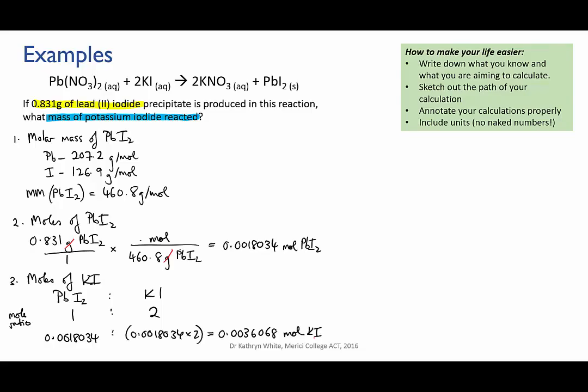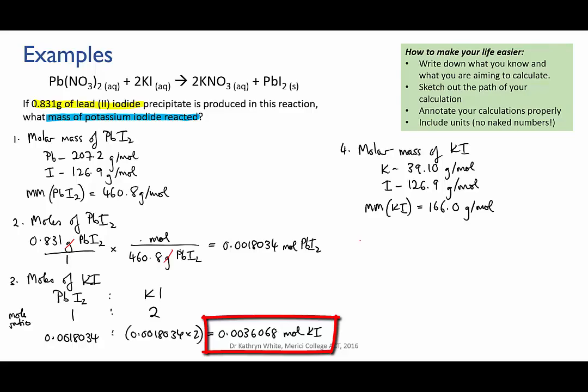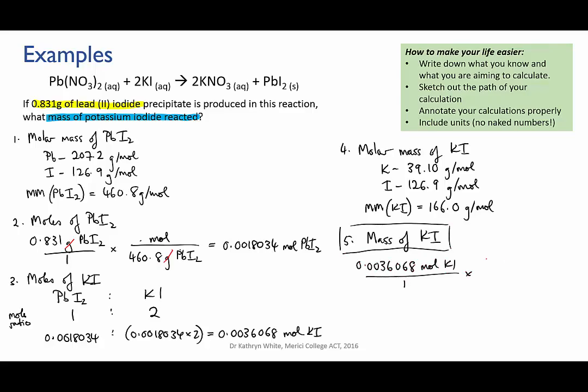Okay last step we have the moles of potassium iodide we just need to convert that to a mass. For that we need the molar mass of potassium iodide so again we consult the periodic table and we work out that the molar mass of KI is 166.0 grams per mole. Now we convert the 0.003608 moles of KI to a mass by multiplying by the molar mass this time the moles cancel out leaving grams which gives us 0.59873 grams which rounds to 0.599 grams of potassium iodide and that's our final answer.